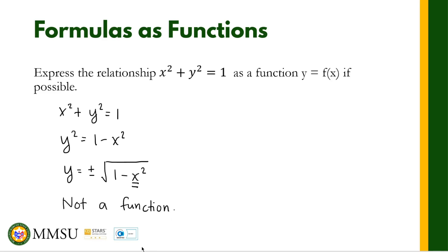Remember the definition of a function: for every input, the output must be unique. In this case the output is not unique, therefore this is not a function. As a simple rule: if the exponent of y is 2, then the given relationship or equation is not a function.